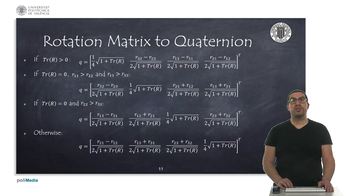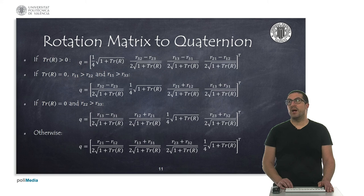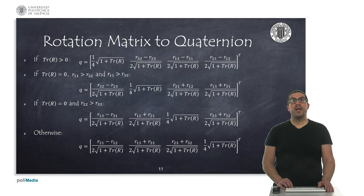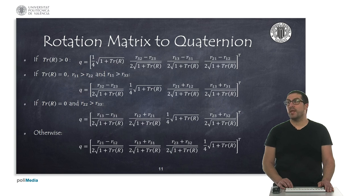The conversion of a rotation matrix to a quaternion is trickier. We must first check the trace of the rotation matrix. If it is greater than 0, we can apply the first expression to compute the quaternion. However, if the trace is 0 or numerically close to 0, we should apply one of the other three expressions depending on their conditions — we must identify which is the largest element in the trace and apply the corresponding formula. These formulas are provided here just for reference; you don't need to remember them, just look them up if needed.